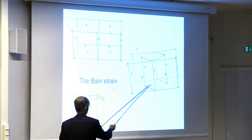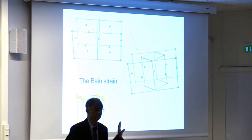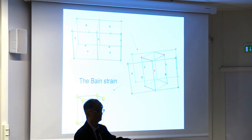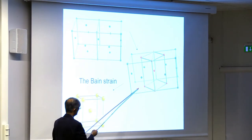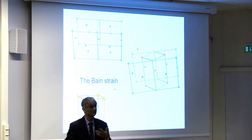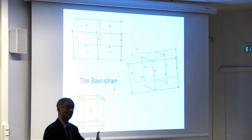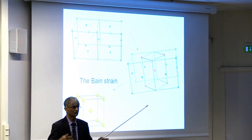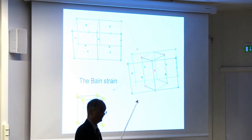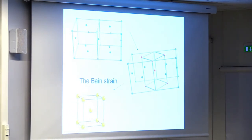Of course, this implies a certain orientation relationship between parent and product phases. But this is not what is actually observed — we don't observe that 001 of austenite is parallel to 001 of ferrite and 100 of ferrite is parallel to 110 of austenite. We observe another orientation relationship in which the close-packed planes are roughly parallel and the close-packed directions within those planes are also roughly parallel. I've highlighted one discrepancy. But let's see whether the Bain strain actually leaves a line completely coherent between the parent and product lattices.